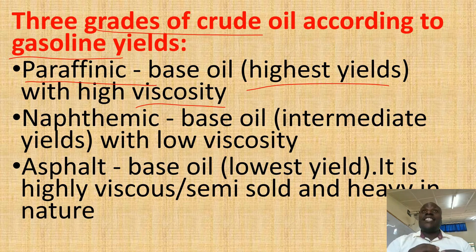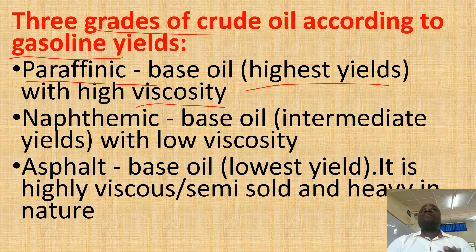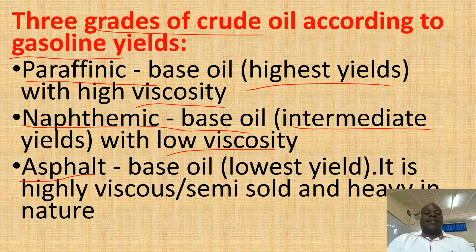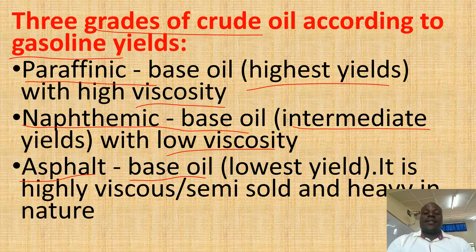Some might be very thick, another one might be very mobile, another one just in the middle. Remember how we explained it with the types of lava and magma. Another one is naphthenic base oil. This one has intermediate yields with low viscosity. Then we have asphalt base oil. This one has the lowest yields and it is highly viscous — almost solid and very heavy in nature.